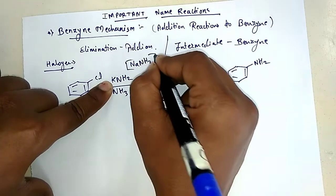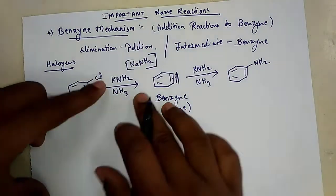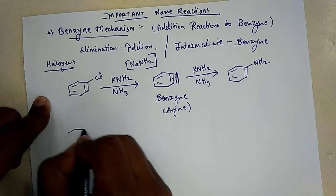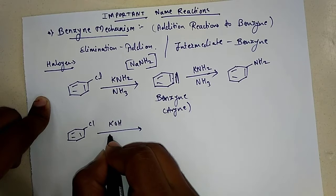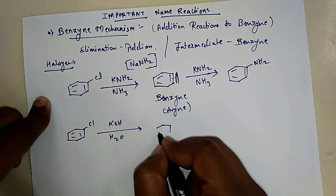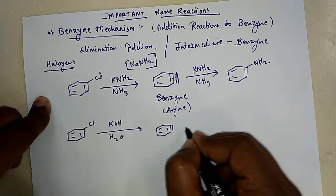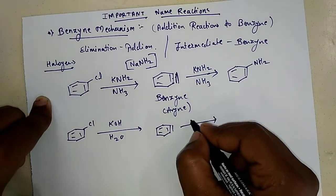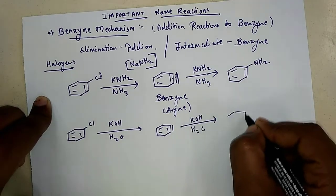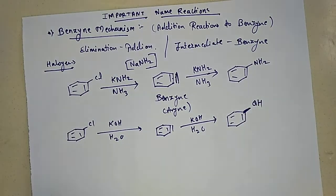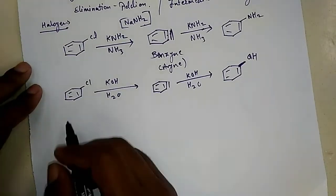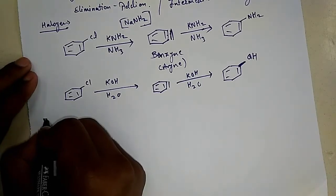Instead of KNH2, we can use NaNH2 also, sodamide, just little bit difference of reactivity. This mechanism goes with another sort of nucleophile also, such as KOH/H2O, where we will get phenol via benzyne formation. So this is a sort of a reaction.